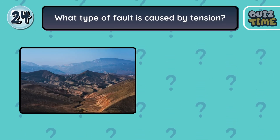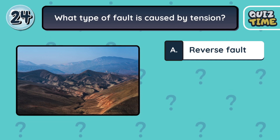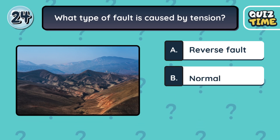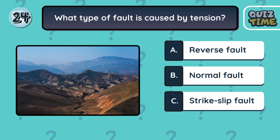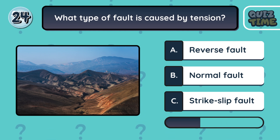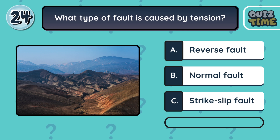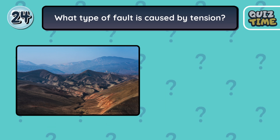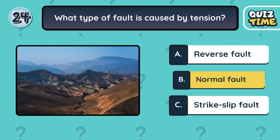Number 24. What type of fault is caused by tension? A. Reverse fault. B. Normal fault. C. Strike-slip fault. The correct answer is B. Normal fault.